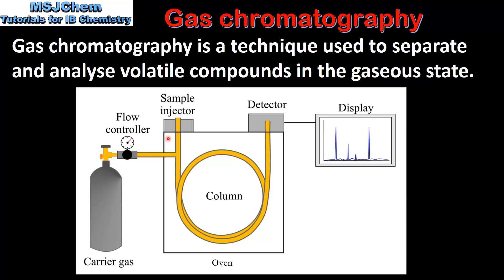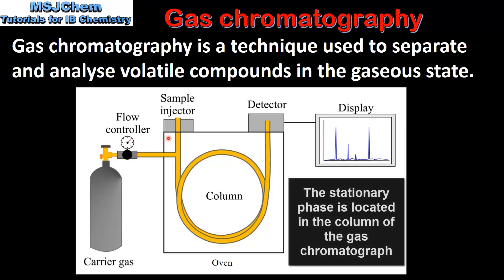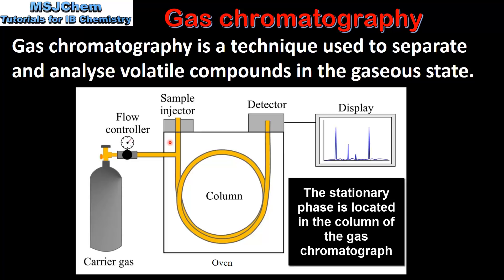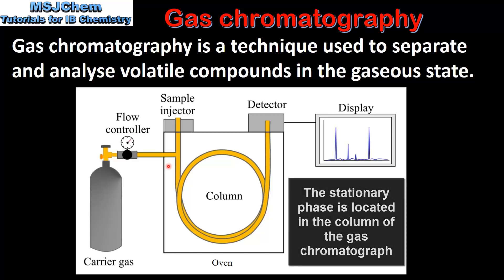The vaporized sample is carried by the mobile phase over the stationary phase, which is in the column. The stationary phase is usually a long-chain hydrocarbon supported on a silicon dioxide surface.